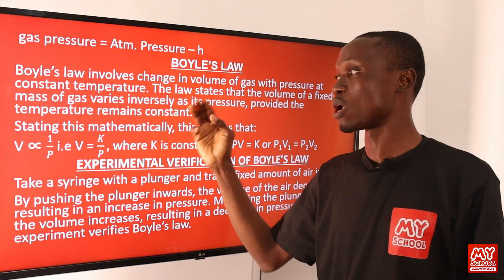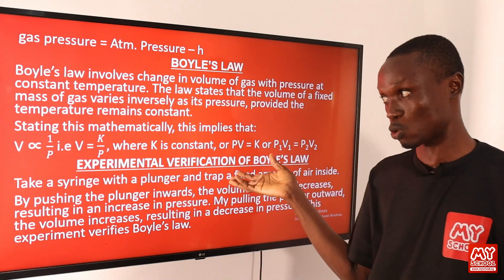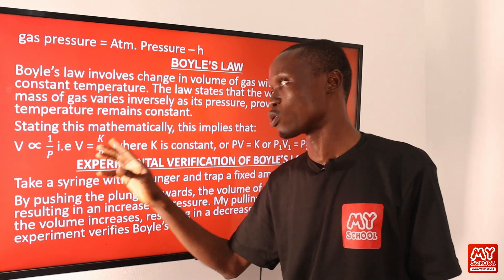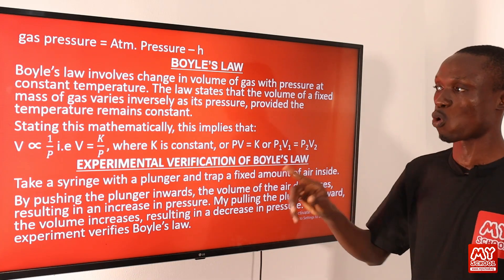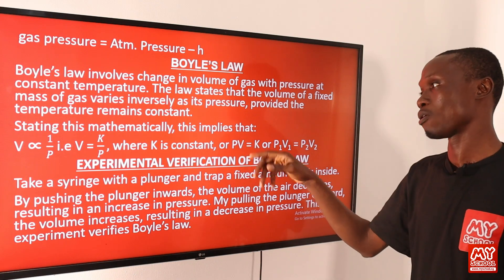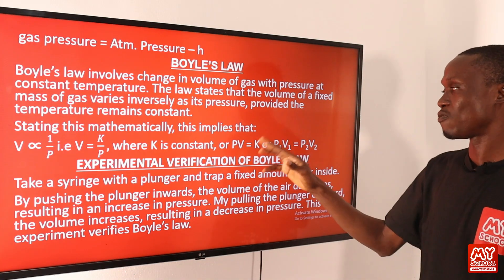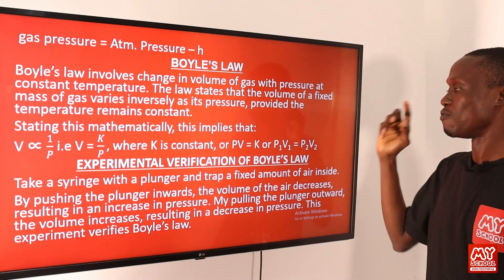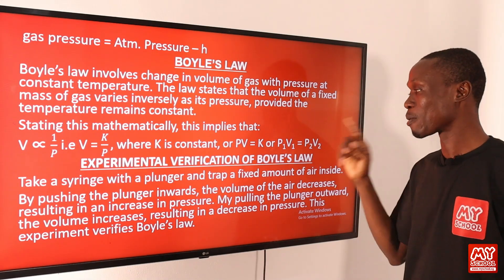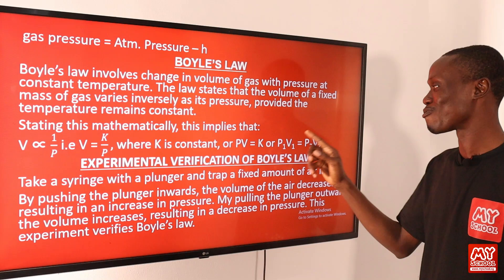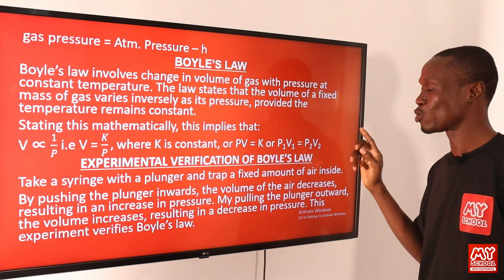To work with this relationship we introduce a constant, so that V equals k over P, where k is a constant. Making k the subject of the formula gives k equals VP, so PV equals k. This can also be written as P₁V₁ equals P₂V₂, where P₁ is the initial pressure, V₁ is the initial volume, P₂ is the final pressure, and V₂ is the final volume of the gas.